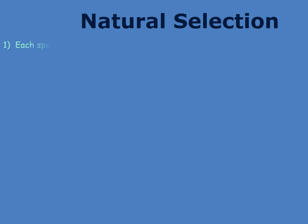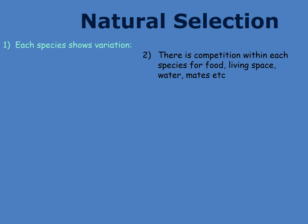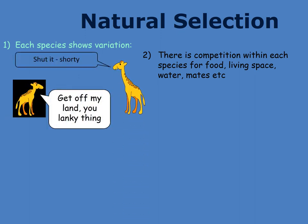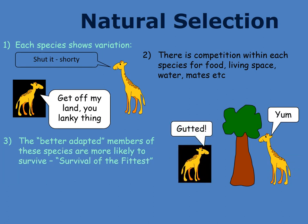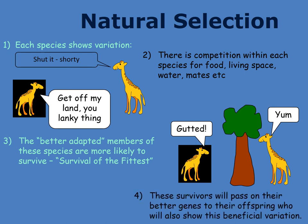Each species shows variation, and there's competition within each species for food, living space, water, and mates. For example, with the finches on one particular island, there would have been finches of different varieties — shorter beaks, longer beaks, harder beaks. There's a short giraffe and a tall giraffe. The better adapted members of a species are more likely to survive — this is called survival of the fittest. The large finch with the strong beak can eat nuts that others can't. The tall giraffe will be able to eat from the trees, while the short one probably won't pass on its genetics to the next generation. The survivors will pass on genes to their offspring and show this beneficial variation.